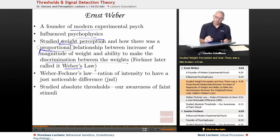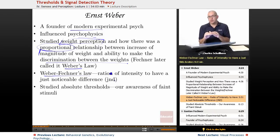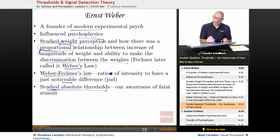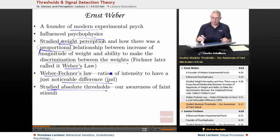A guy named Fechner came up with the idea later and called it Weber's Law — or the Weber-Fechner Law. Weber's Law is the ratio of intensity required to produce a just noticeable difference. The just noticeable difference is the degree to which a stimulus must change for us to notice the distinction between one level and another. Weber studied not only absolute thresholds but also, with Fechner, the just noticeable difference, noticing proportions that differ across vision, sound, brightness, and other senses.